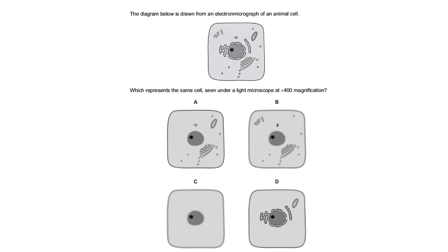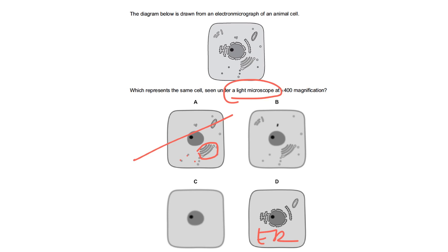A diagram is drawn from an electron micrograph of an animal cell. The question asks which part represents the same cell seen under a light microscope at 400× magnification. The Golgi and some vesicles are not visible with a light microscope, and neither is the endoplasmic reticulum. Eliminating those options, the correct answer is C.